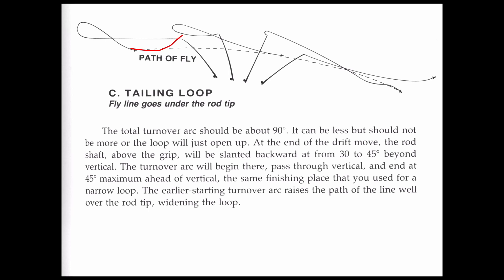The implication Joan gives is exactly what she writes: the fly line goes under the rod tip. And this is exactly what Rod's and my failed CI candidate said — 'It's a tail because the fly line went under the rod tip.' He may have taken this directly from Joan's book, from Sheila's book, from Mack's book, or he may have misread Jason's subtle illustrations of tails.